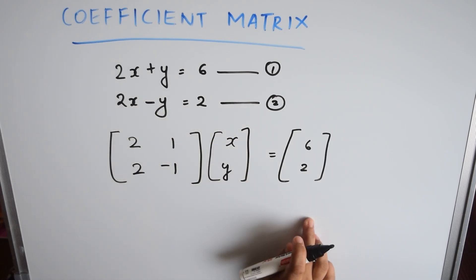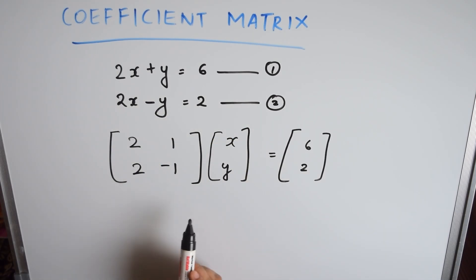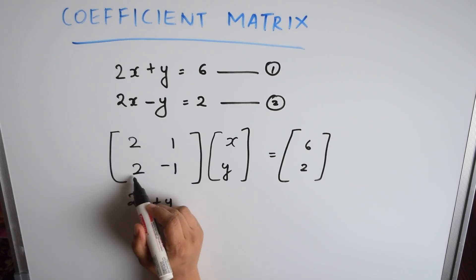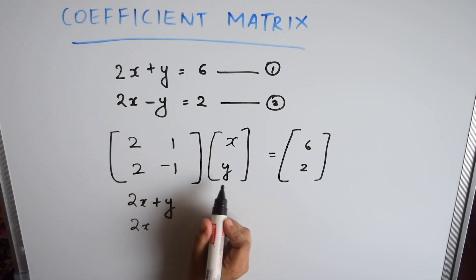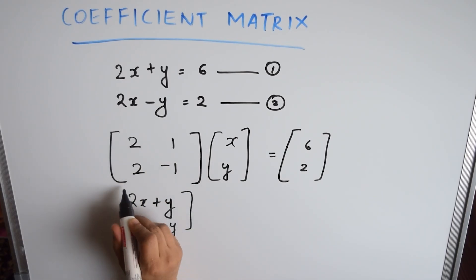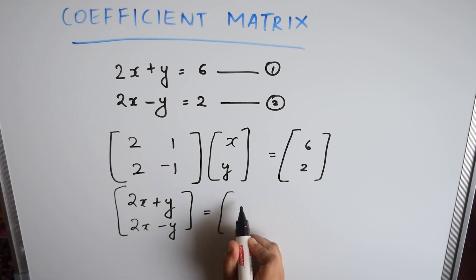This part is written as a column vector here. If you multiply these two matrices, you will get these equations: 2x plus y, 2x minus y, which is equal to 6, 2.